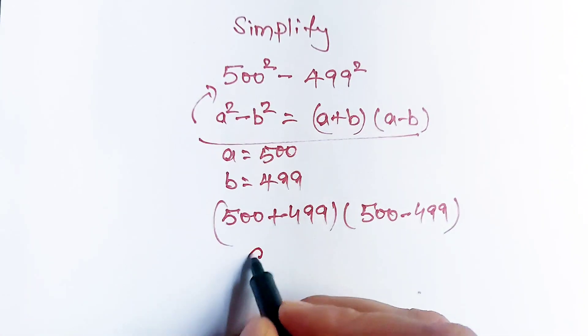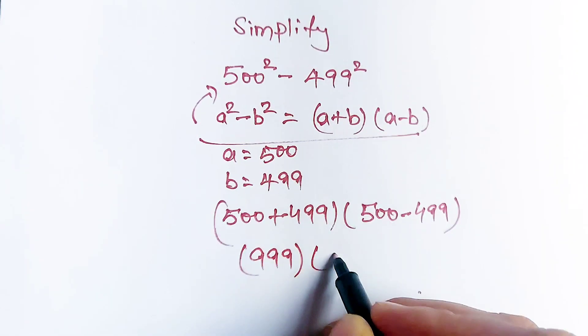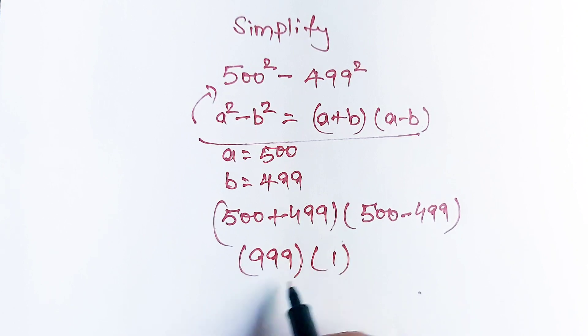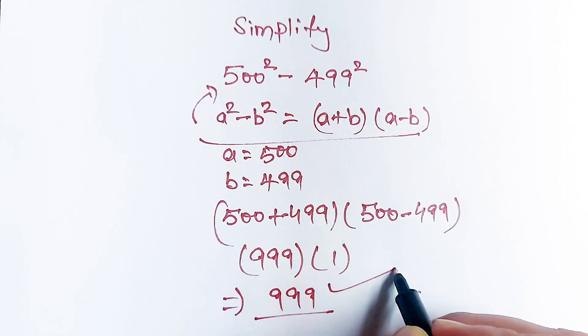Now this quantity will become 999 and this is equal to 1. Now multiply this number 999 to 1 is equal to 999 and that is our final answer.